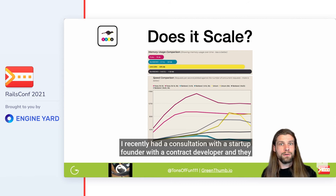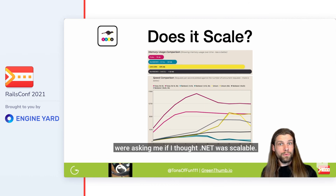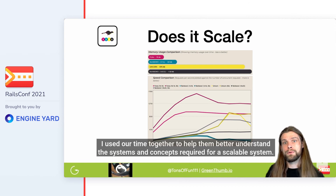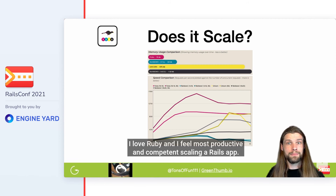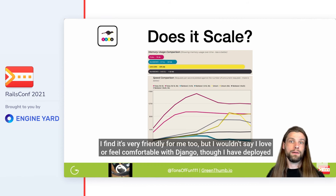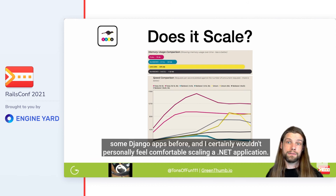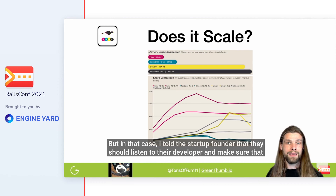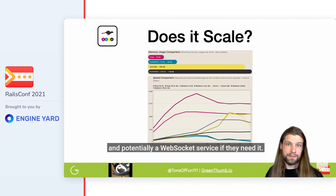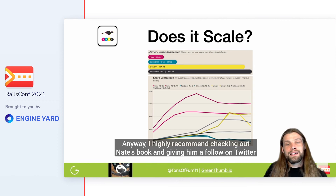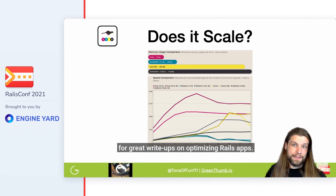I recently had a consultation with a startup founder with a contract developer and they were asking me if I thought .NET was scalable. I used our time together to help them better understand the systems and concepts required for a scalable system. It's always best to use what the developer feels most comfortable and productive using. I love Ruby and feel most productive and confident scaling a Rails app. Python is very friendly for me too, but I wouldn't say I love or feel comfortable with Django, though I have deployed some Django apps. I certainly wouldn't personally feel comfortable scaling a .NET application, but I told the startup founder to listen to their developer and follow scaling practices using tools similar to Puma and Sidekiq.